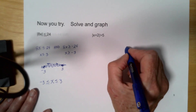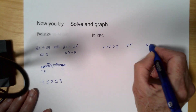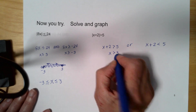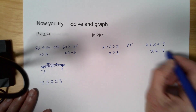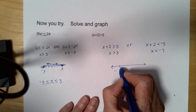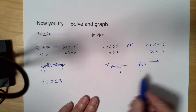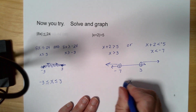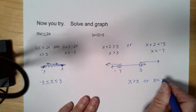This is a GREAT-OR, so it's an OR statement. I have x plus 2 is greater than 5 and x plus 2 is less than negative 5. Subtracting 2: x is greater than 3, and x is less than negative 7. On the number line: negative 7 is an open circle going left, and 3 is an open circle going right. They don't have anything in common, but it doesn't matter because it's an OR statement. So x is greater than 3 or x is less than negative 7.